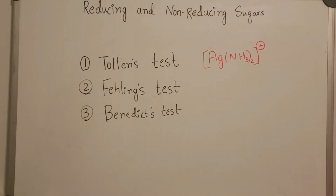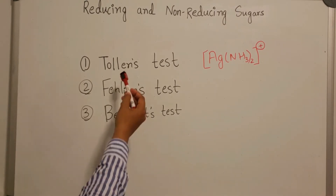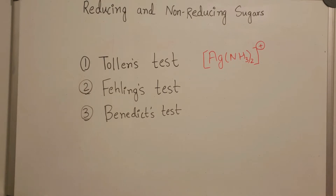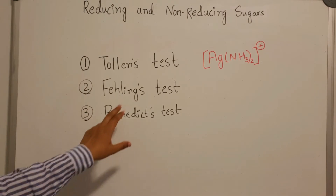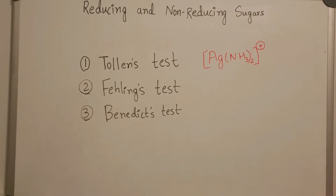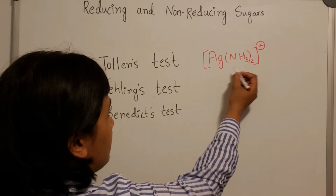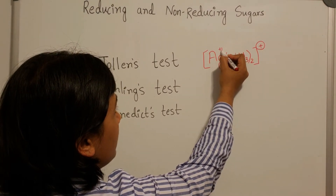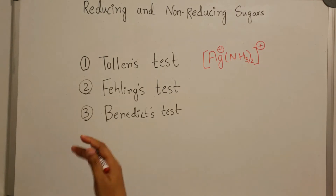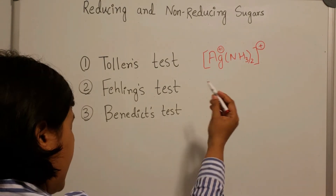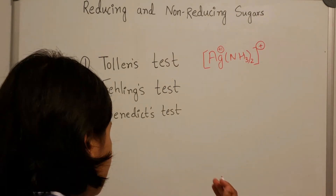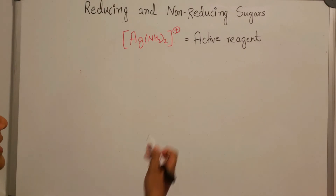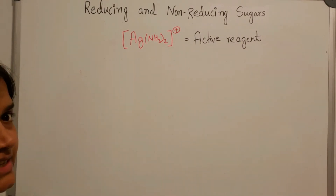There are several tests that can be done to determine if a carbohydrate is reducing or not — like Tollens, Fehling's, and Benedict's test. For today's video I'm only going to focus on Tollens test; you can find details about Fehling's and Benedict's test in my next video. The silver-amine complex, where silver exists in the +1 oxidation state, is the active reagent for Tollens test, and it is not commercially available due to its short shelf life, so it has to be prepared in the lab.